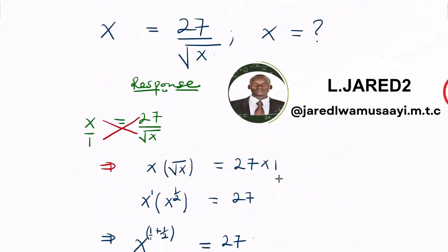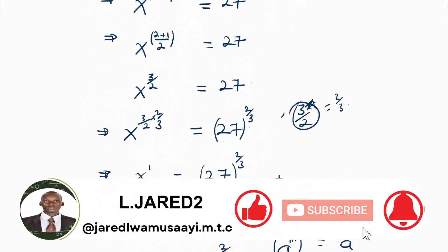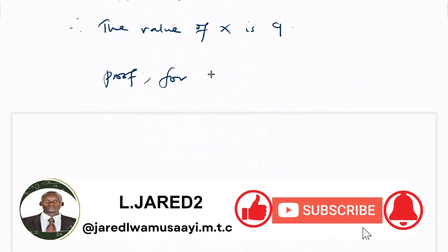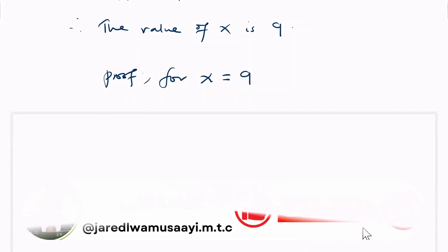So having got 9, we can try to prove to see whether it's correct. Proof: We're saying that for x equal to 9, remember we have x equal to 27 divided by the square root of x. Let's see.